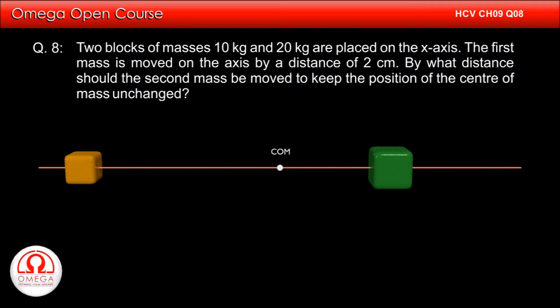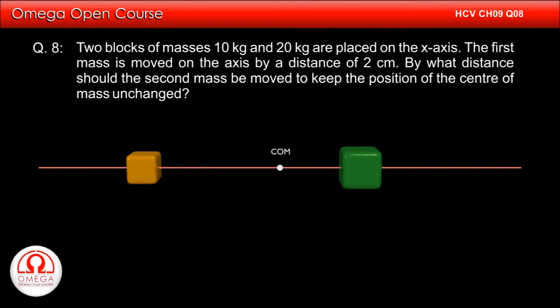Two blocks of mass 10 kg and 20 kg are placed on the x-axis. The first mass is moved on the x-axis by a distance of 2 cm. By what distance should the second mass be moved to keep the position of the center of mass unchanged?